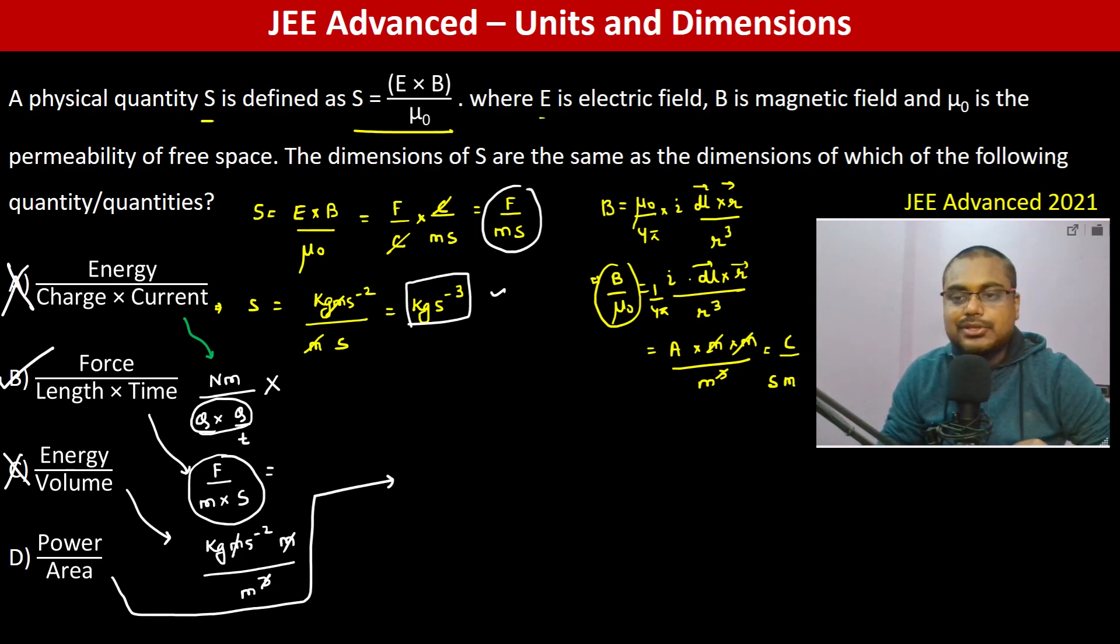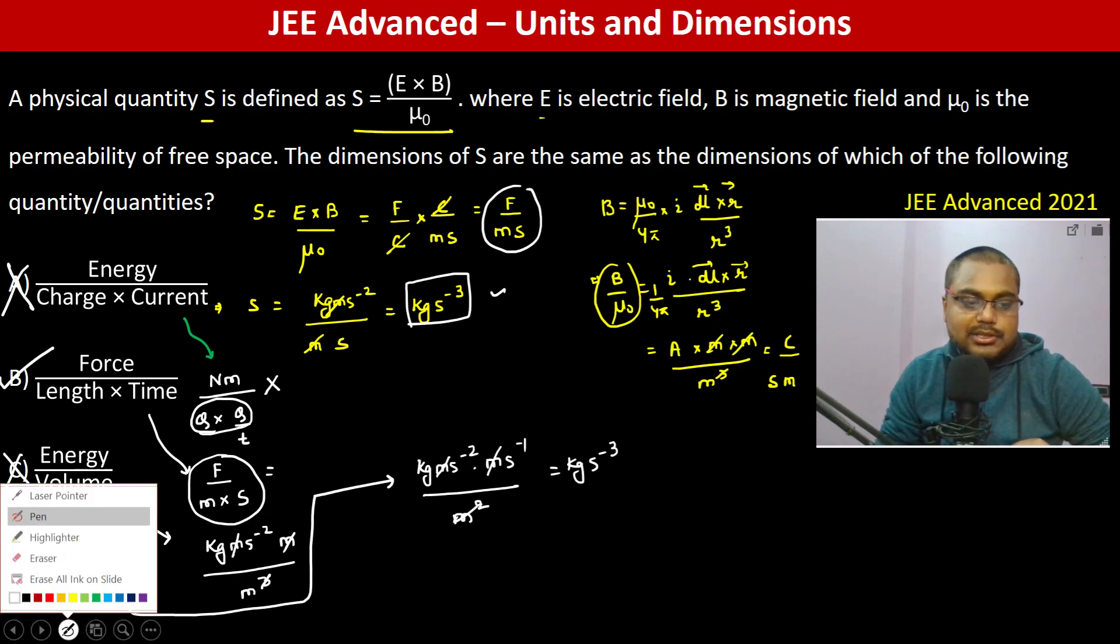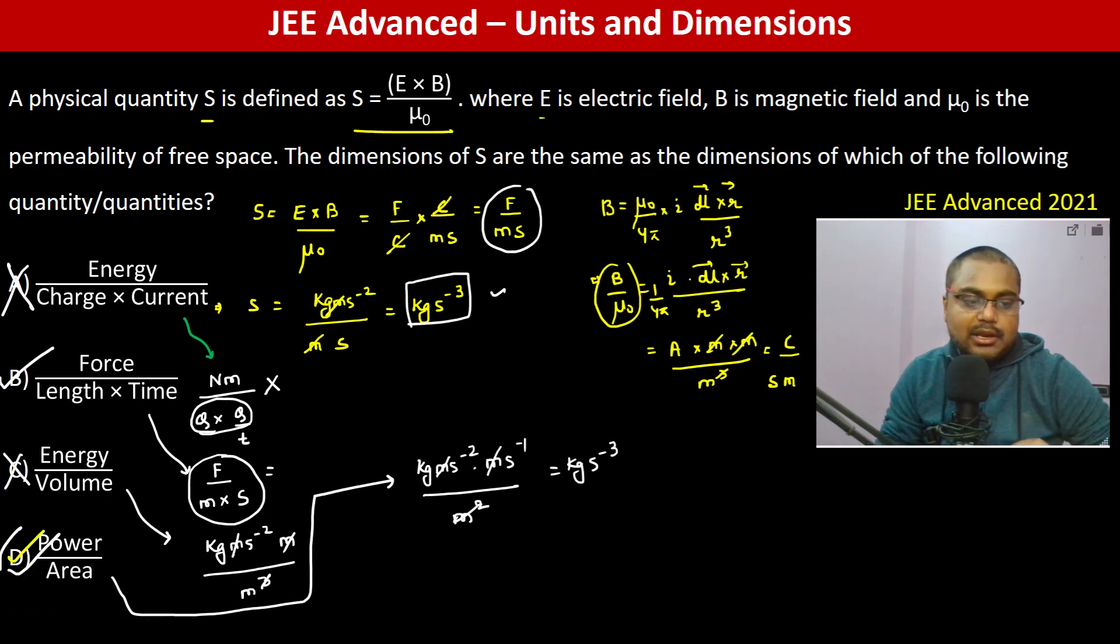D: power by area. Power is F dot v, so F is kg·m·s⁻² times v which is m·s⁻¹ divided by area which is meter square. So again this is kg·s⁻³. Therefore D is going to be the answer. So B and D are the answers. Thank you.